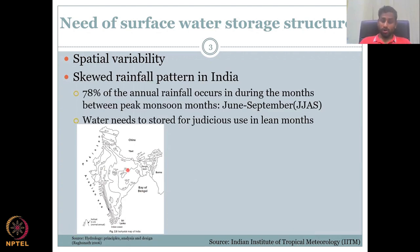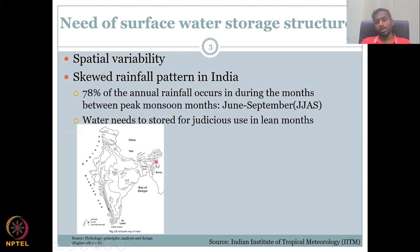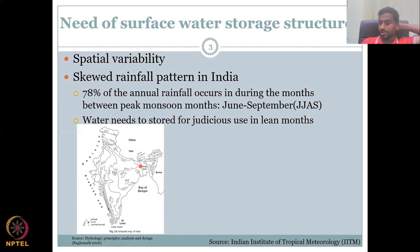Then we have a skewed rainfall pattern. Rainfall is not the same across every month. In the northeast, you do get rainfall almost every day — the wettest part of the planet. But in most regions, especially agriculturally active ones, there is a skewness: 78% of the annual rainfall happens only in the monsoon months.